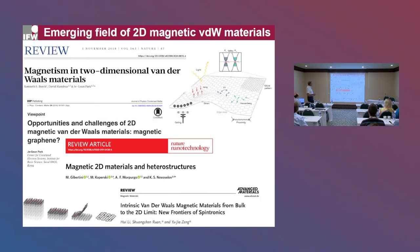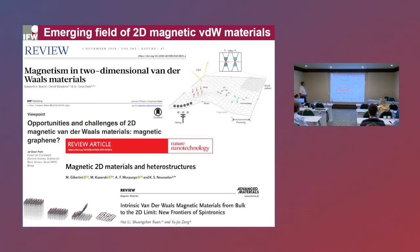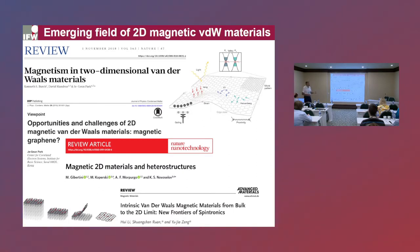The emergent field of two-dimensional van der Waals magnets is not very old — it's about five years old. Many of these materials were known for a long time as magnets, some ferromagnets, some not. But then there was renewed interest in them regarding both fundamental aspects of magnetic order in two dimensions and also possible functionalities in advanced technologies like spintronic applications.